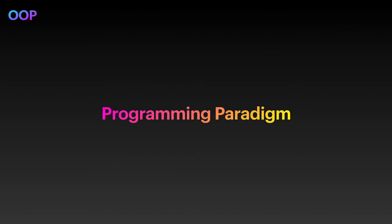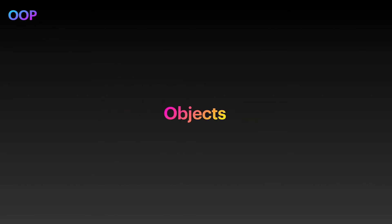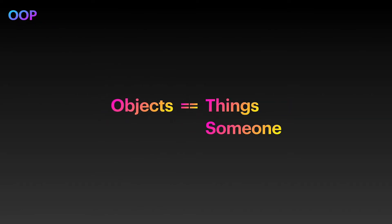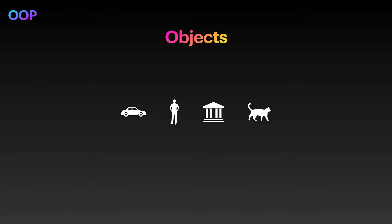Object-oriented programming is a programming paradigm or style based on the concept of objects. It pretty much organizes software design around the data rather than the logic or functions. In the object-oriented programming world, everything is represented with objects — a car, a person, a bank, an animal, and so on. It can be someone or something.